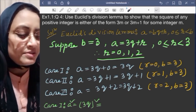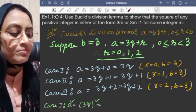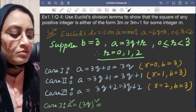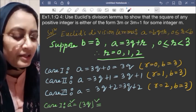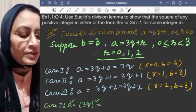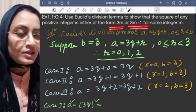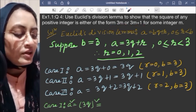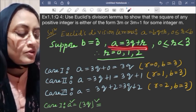Question number 4: Use Euclid's division lemma to show that the square of any positive integer is either of the form 3m or 3m+1 for some integer m. By Euclid's division lemma, a=bq+r, 0≤r<b. Suppose b=3. Why b=3? Because we have 3m or 3m+1, that means multiple of 3.